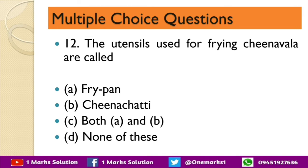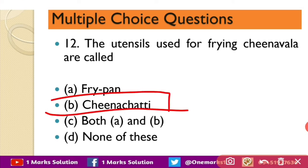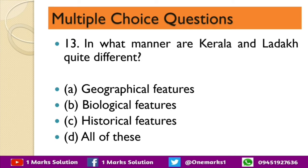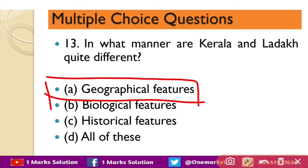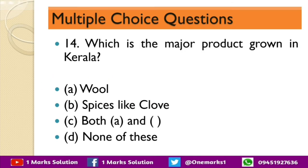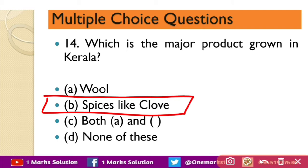The correct option is China Chatti. Next question: in what manner are Kerala and Ladakh quite different? The options are geographical features, biological features, historical features, or all of these. The correct answer is geographical features. Next question: which is the major product grown in Kerala? The options are wool, spices like clove, both A and B, or none of these. The correct option is spices and clove.